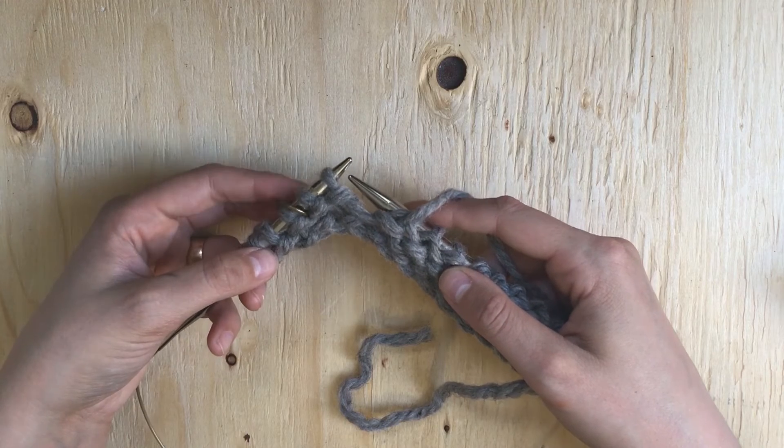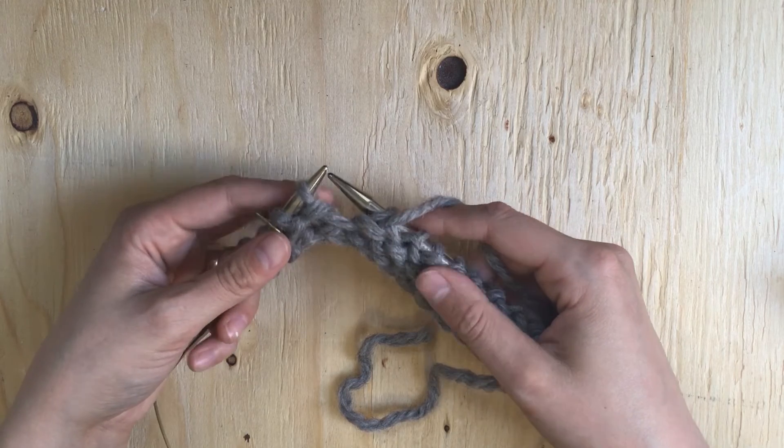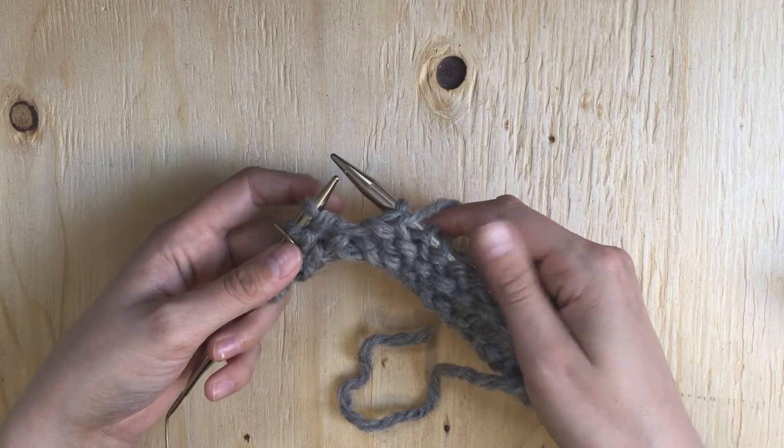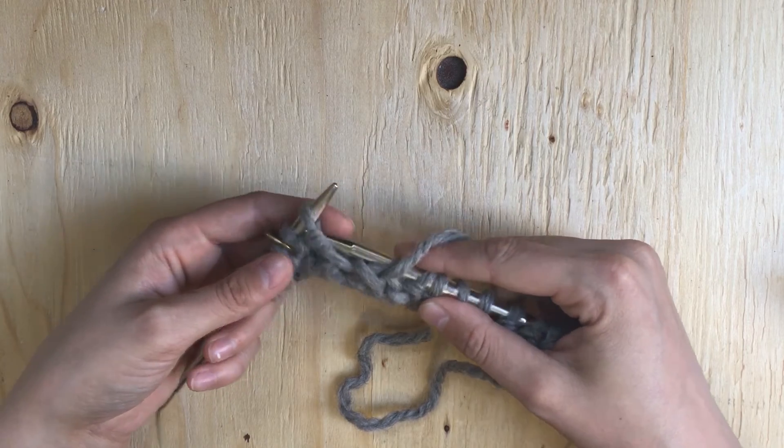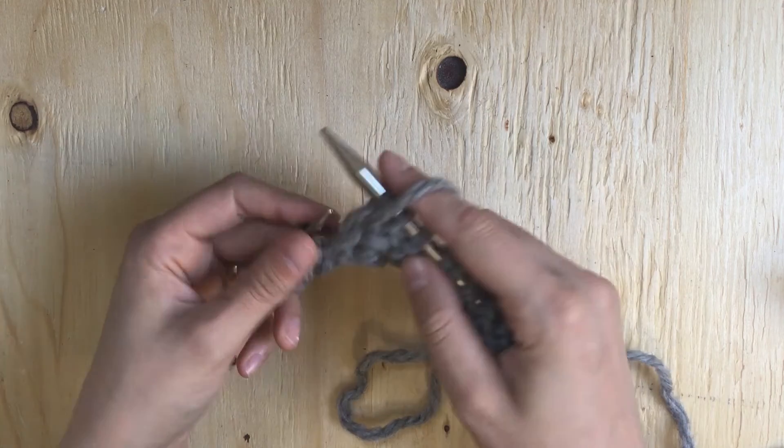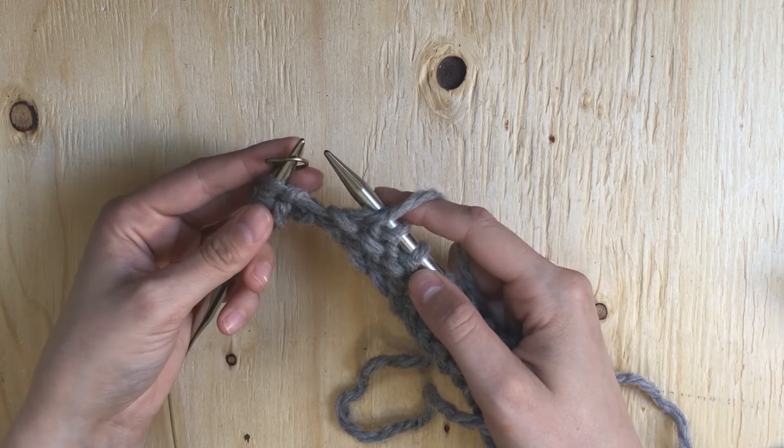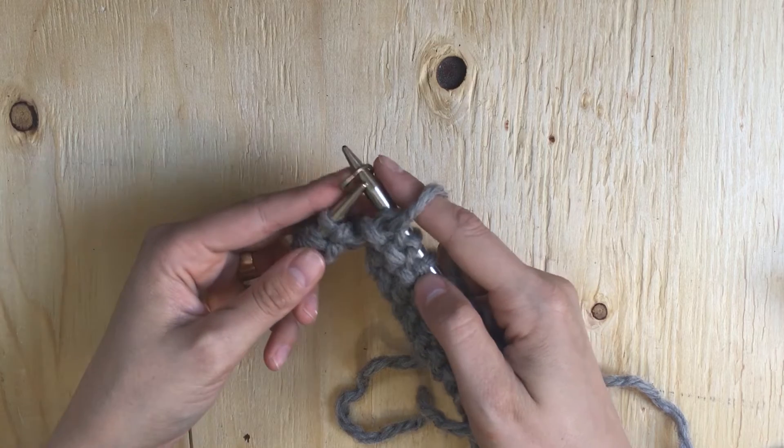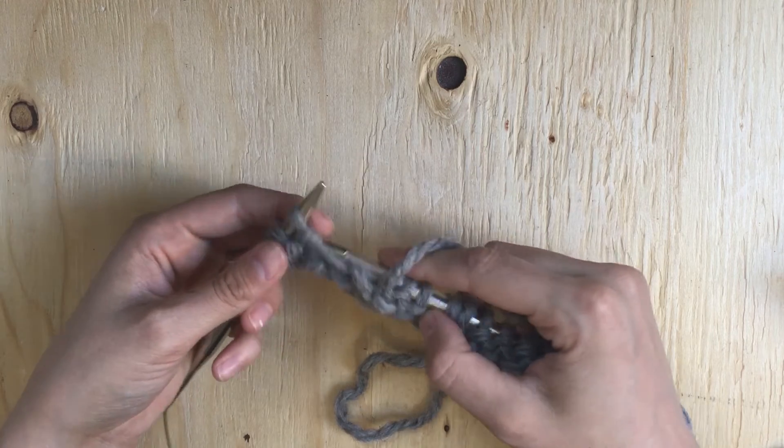Alright, so I'm coming up to my marker here again on my left needle. I'm working in stockinette stitch so I'm purling this row. So I'm just going to purl right up to my stitch marker and then move the stitch marker from my left needle to my right needle. That's it.